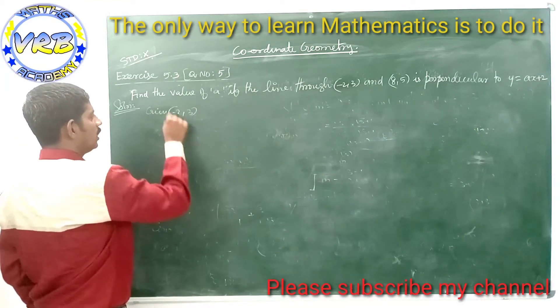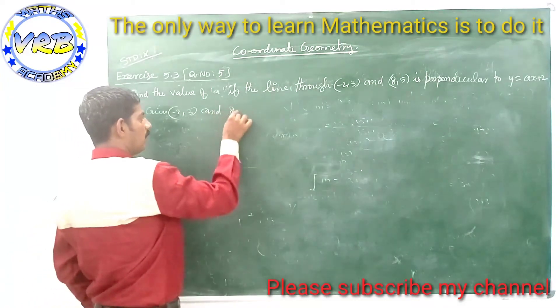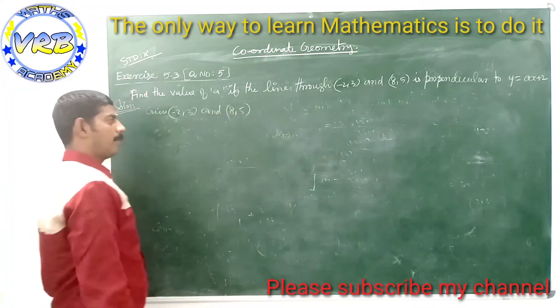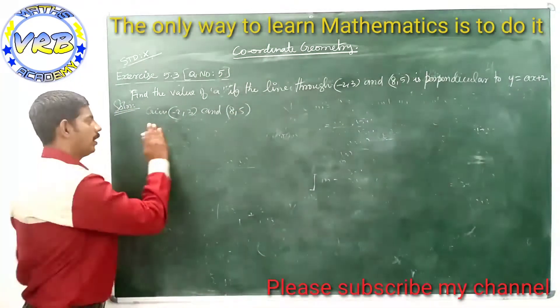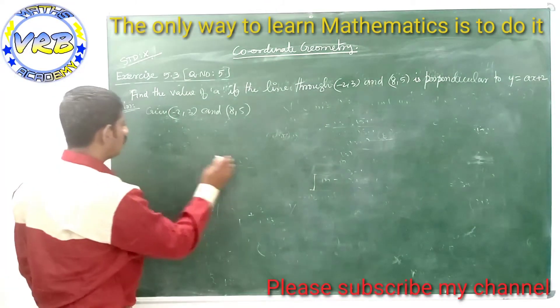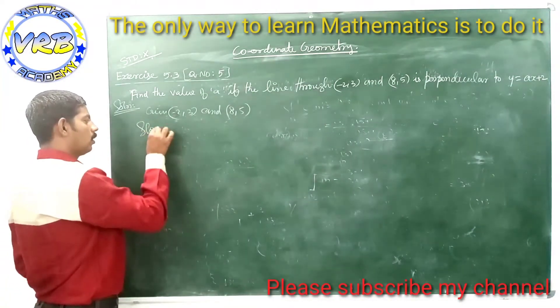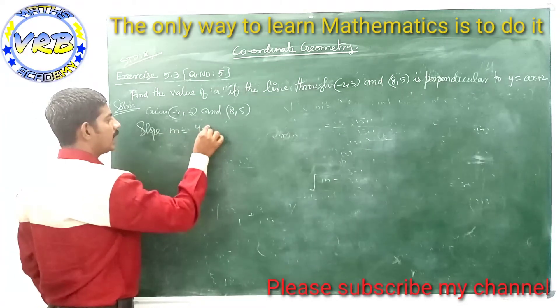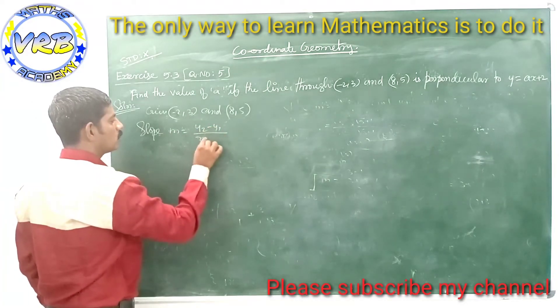The given points are (-2, 3) and (a, 5). The line passes through these two points, so we use the slope formula: m = (y2 - y1)/(x2 - x1).